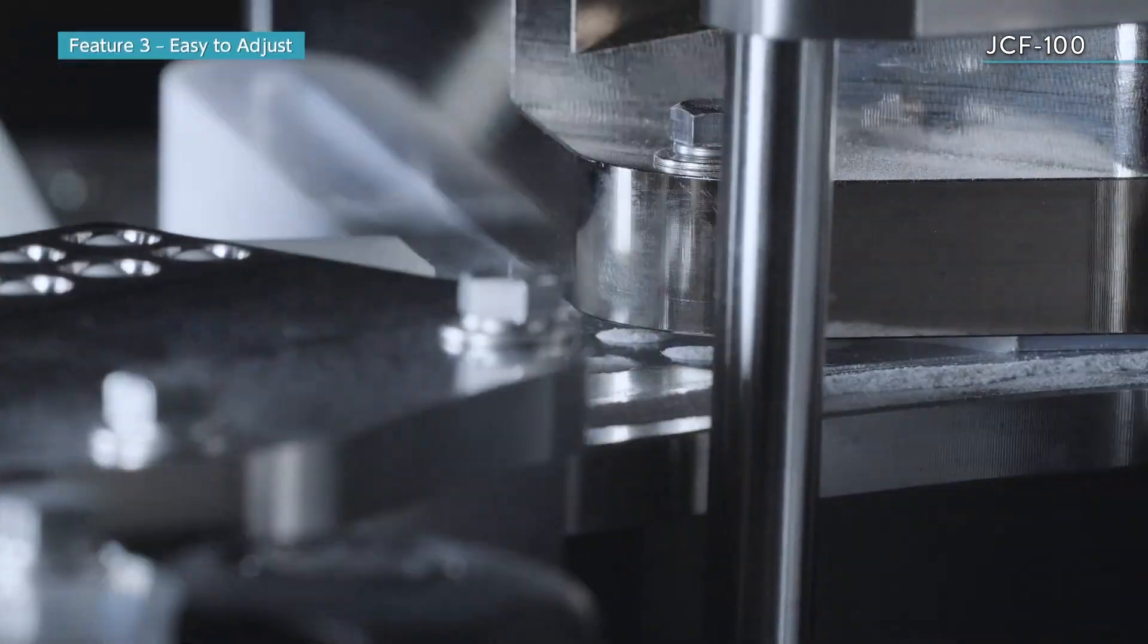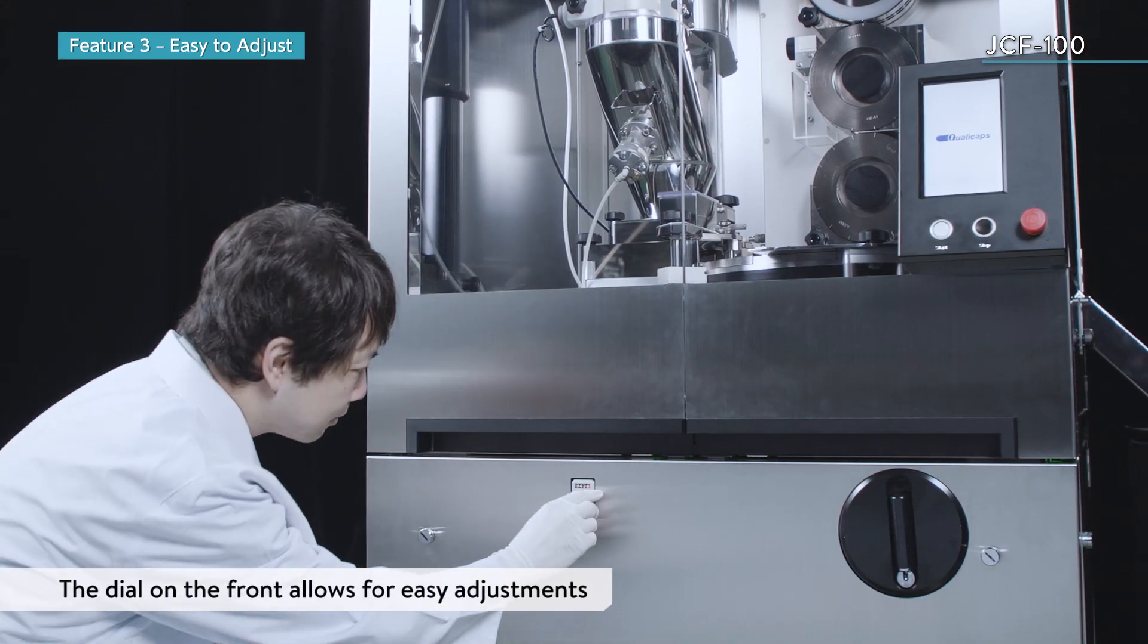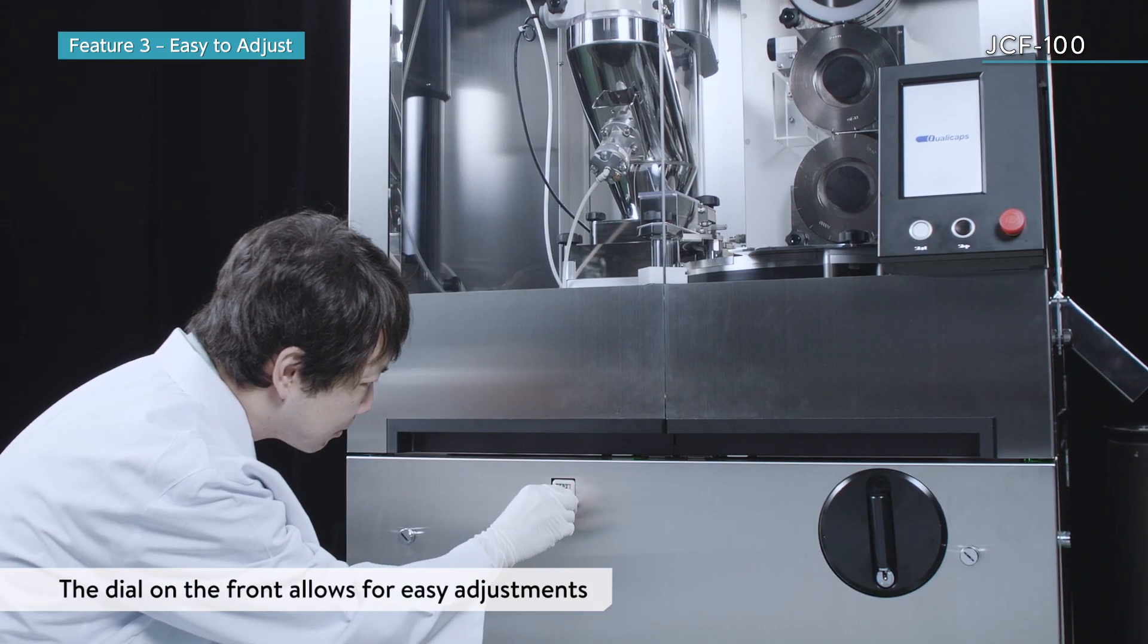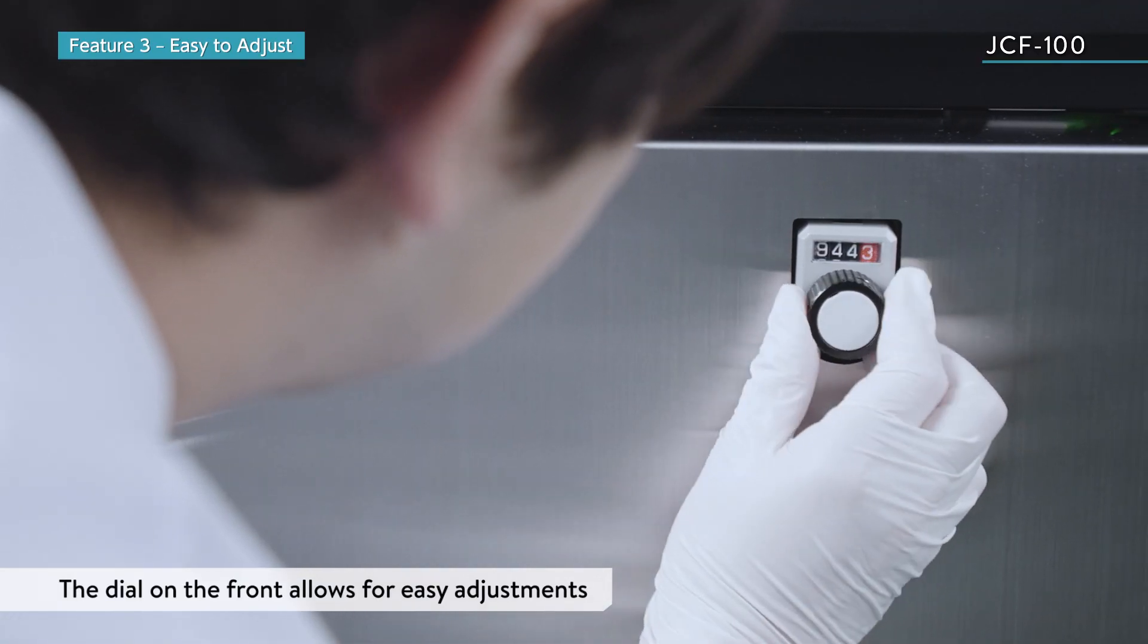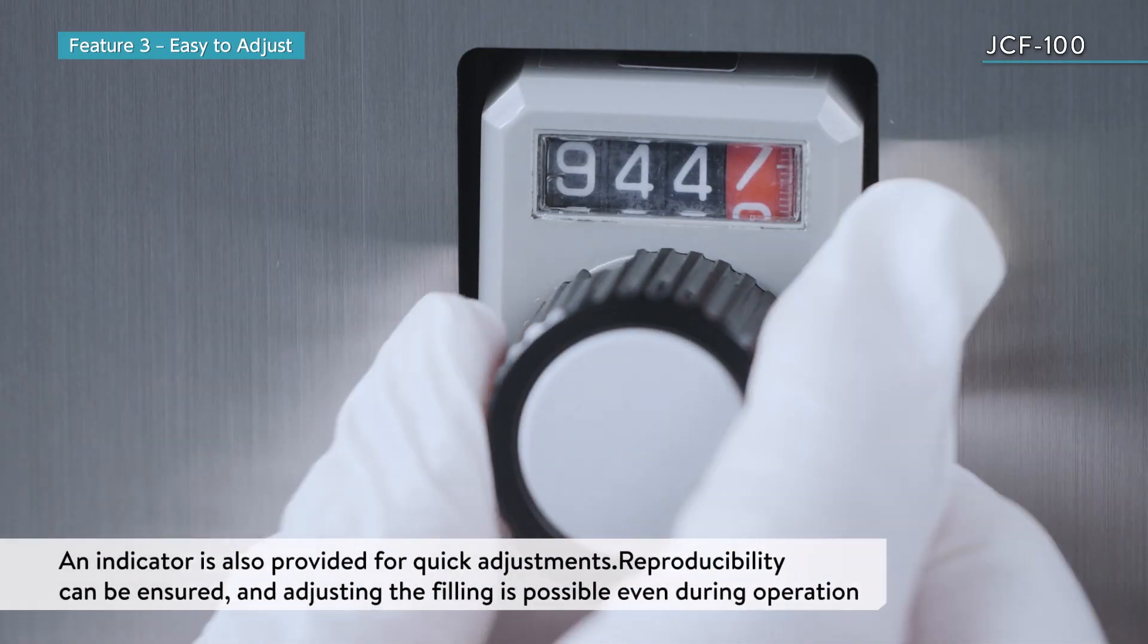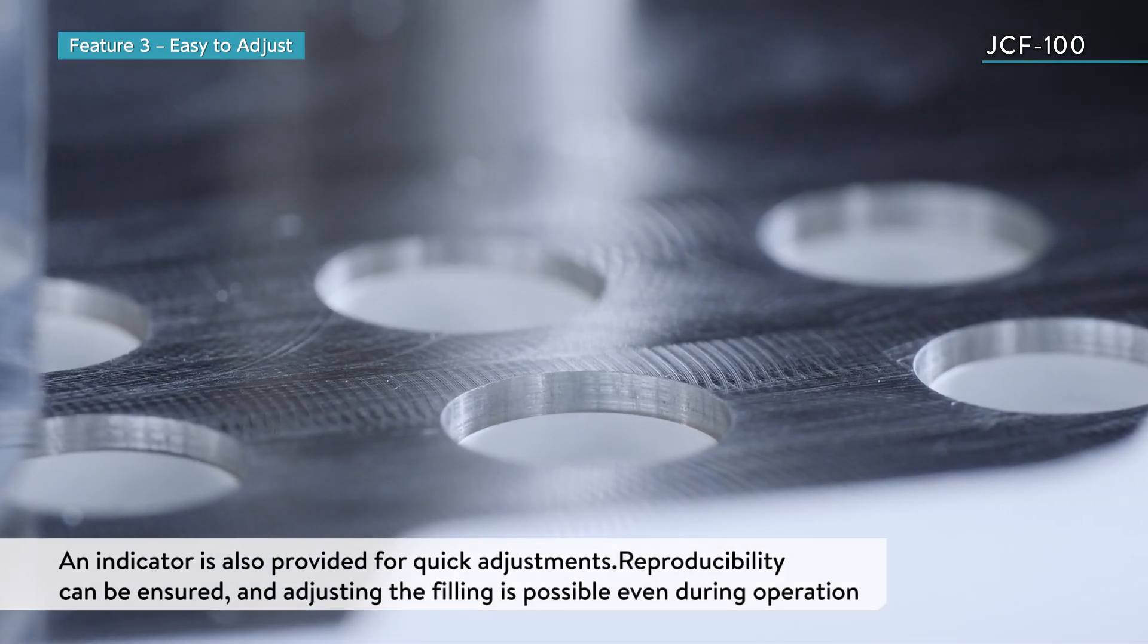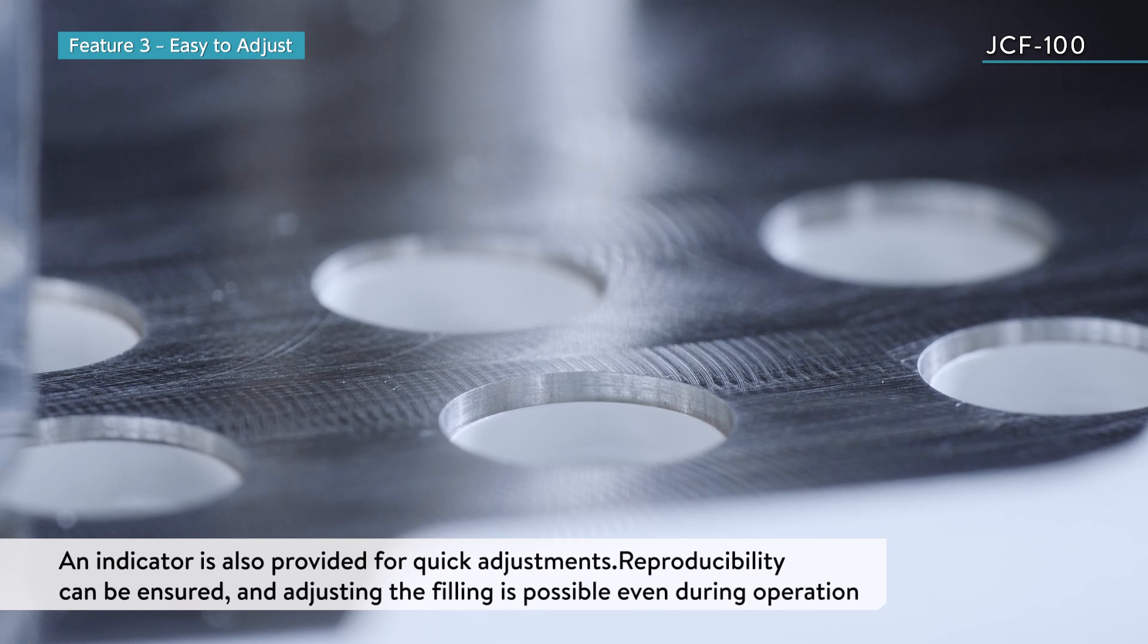The dial on the front of the JCF-100 allows the fill volume to be easily adjusted, which is the most important factor in capsule filling. An indicator is also provided for quick adjustments and to ensure reproducibility. Adjusting the filling is possible even during operation.